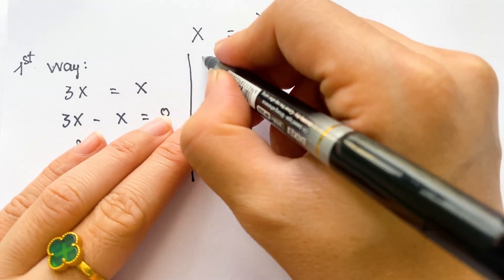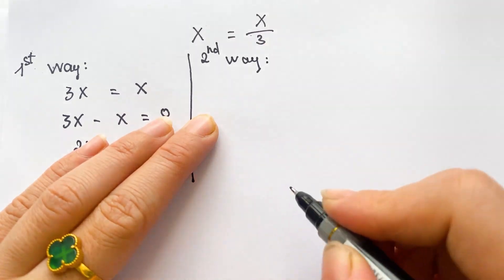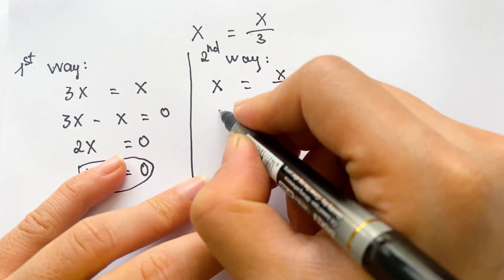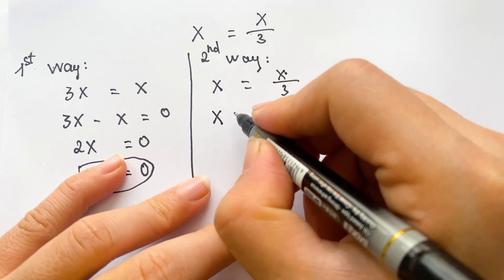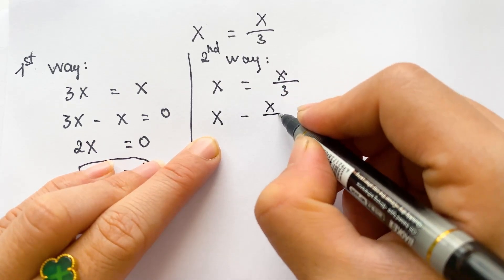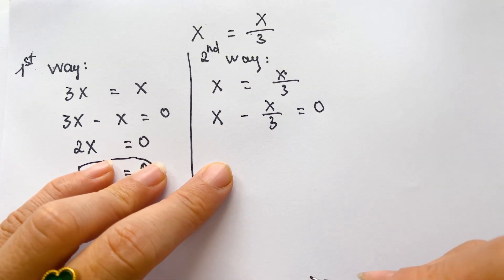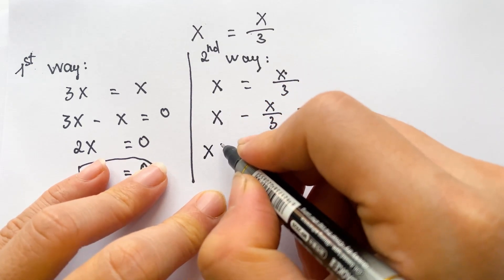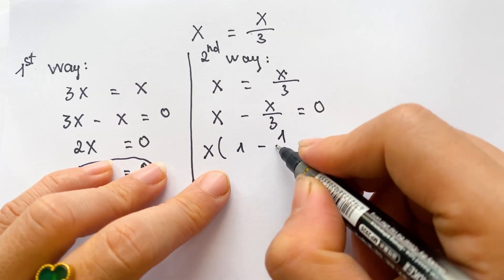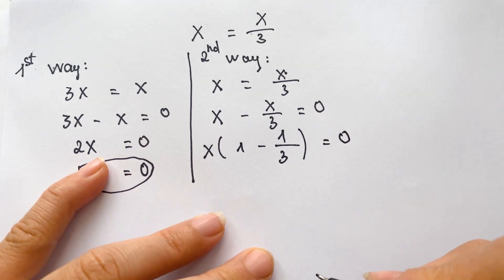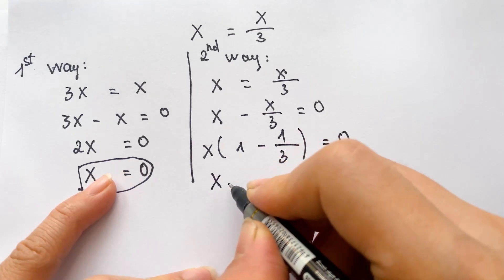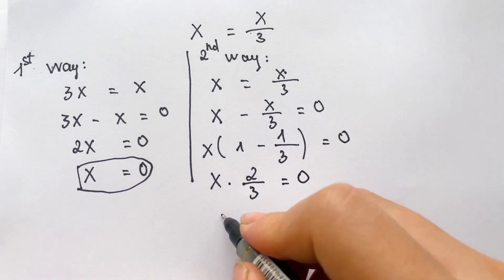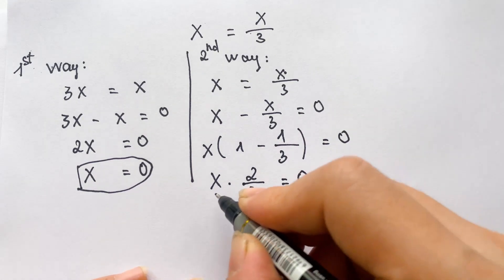That is the answer for the first way. For the second way, we can write x equals x over three, so we move x over three to the left hand side: x minus x over three equals zero. Now x is a common factor, so we take x out: x times one minus one third equals zero. That gives x times two thirds equals zero, so x equals zero.